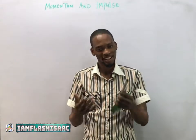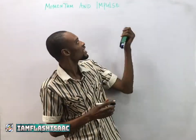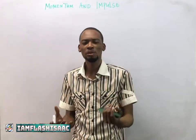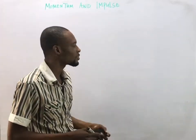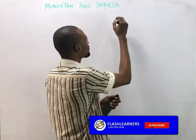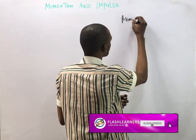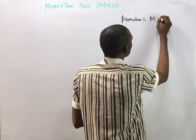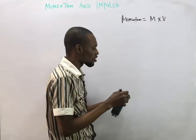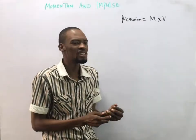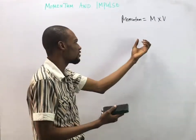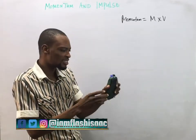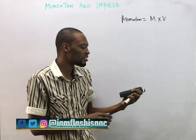Hello guys, I am Flash Isaac and today I'll be taking you through momentum and impulse. Momentum is simply mass times velocity, so the momentum of a body is the product of its mass and velocity. If a body has a mass and it's moving at a particular velocity, then it has a momentum.